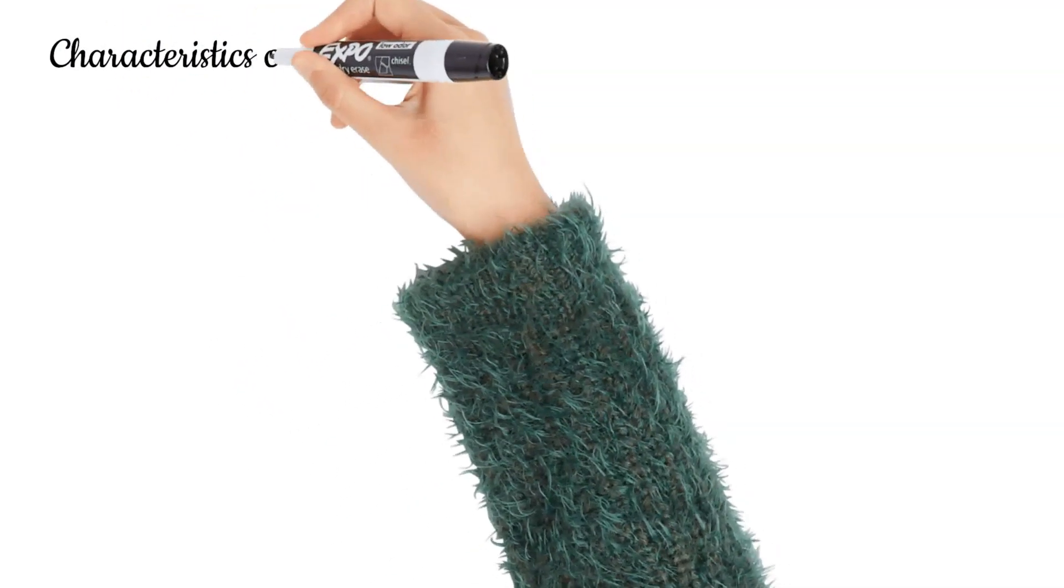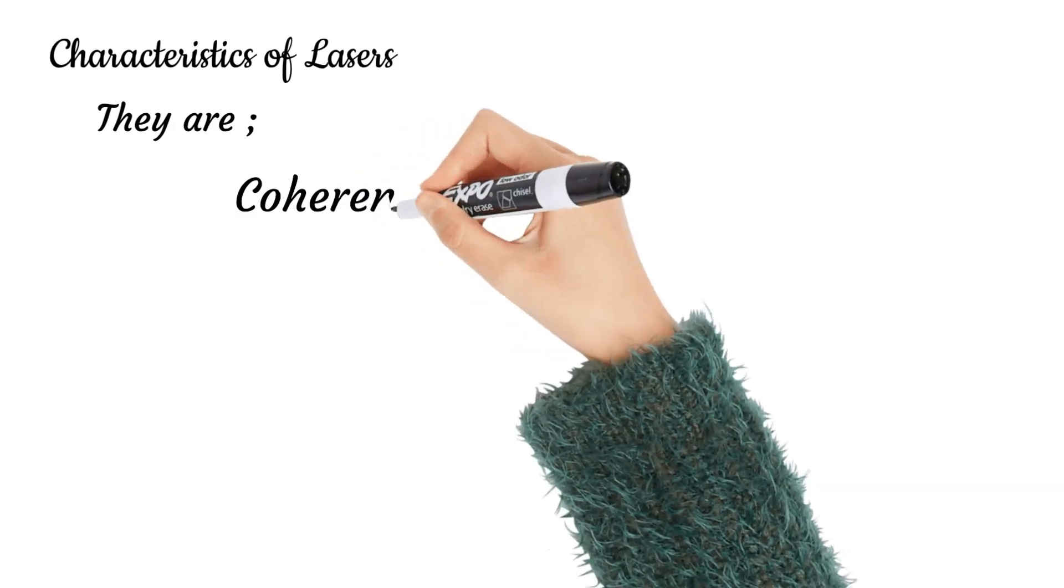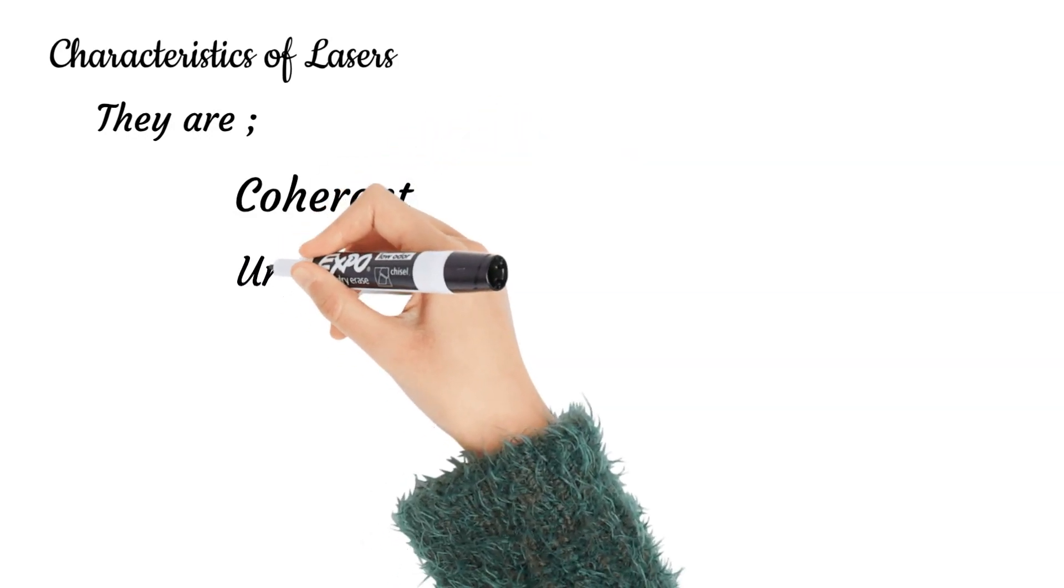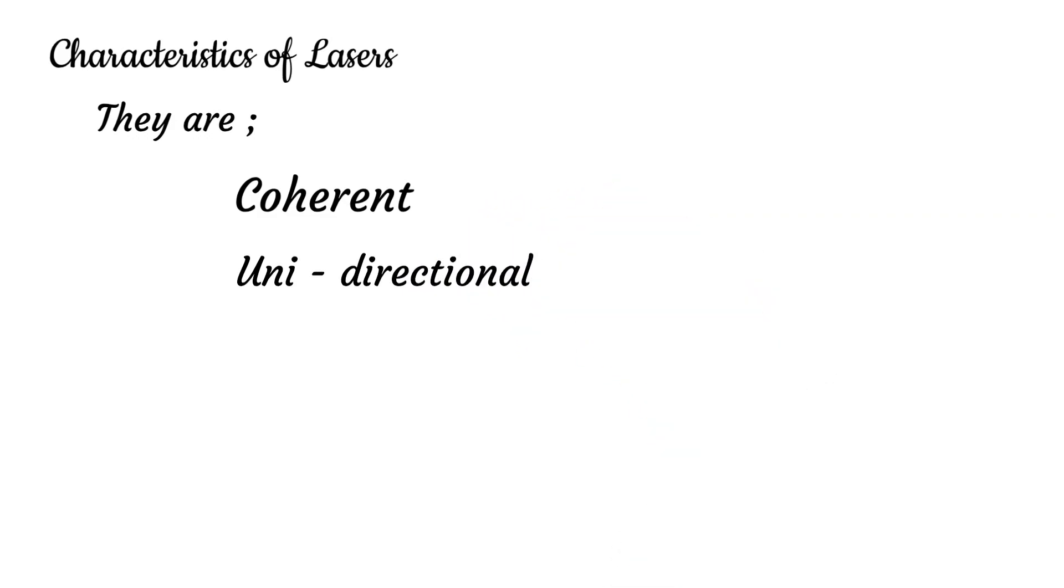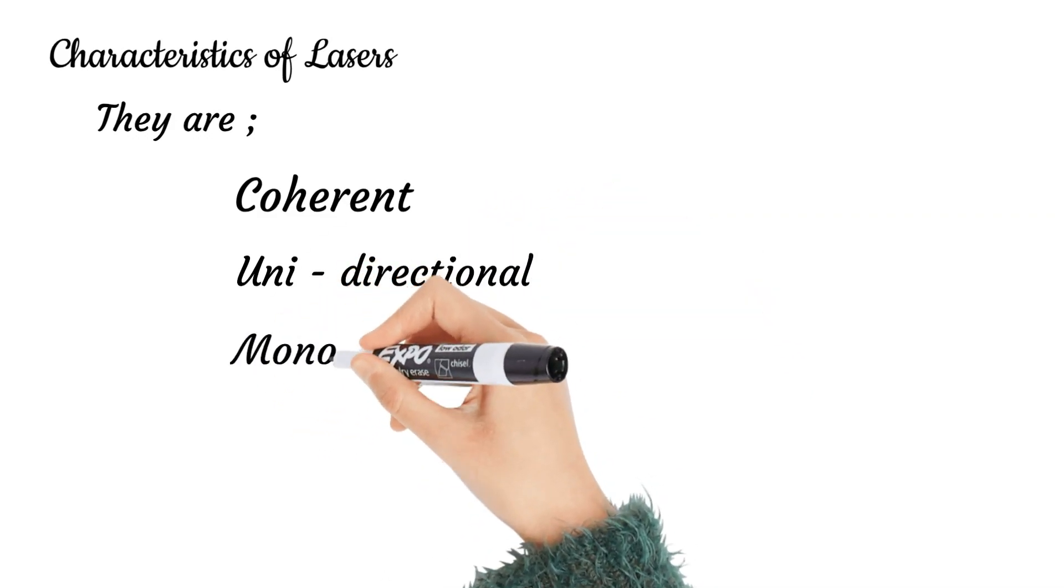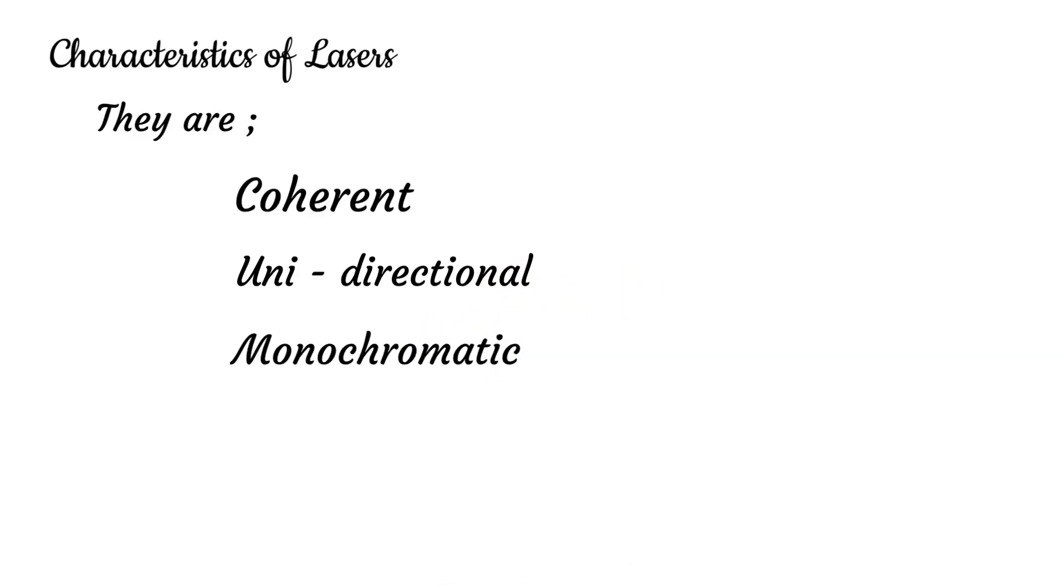Characteristics of lasers: number one, they are coherent - they travel for long distances. Unidirectional - they travel in one direction. Monochromatic - they have one wavelength and one color. And finally, they have high intensity.